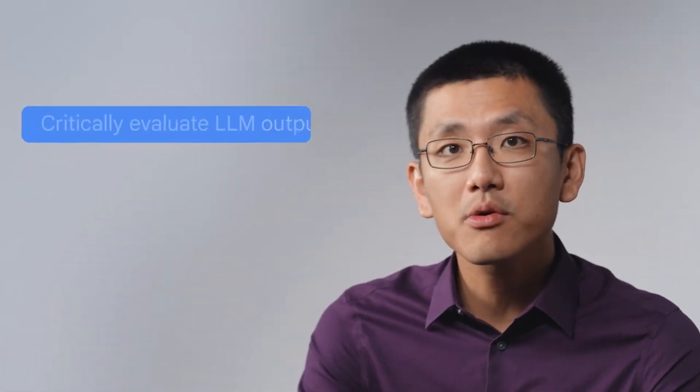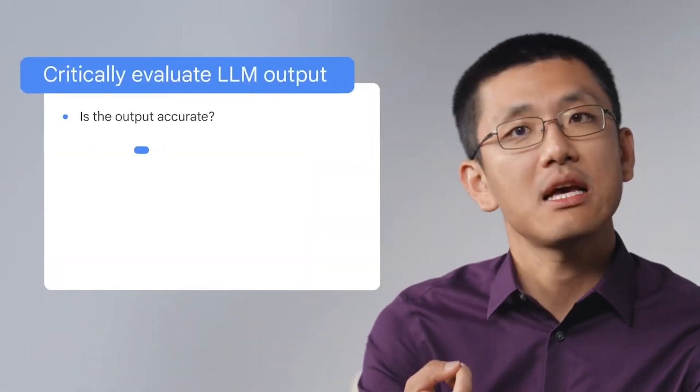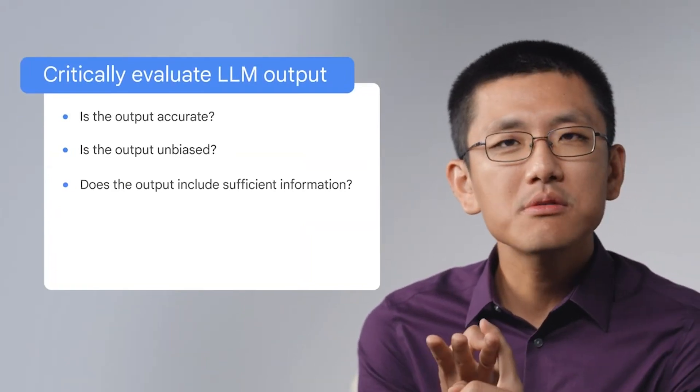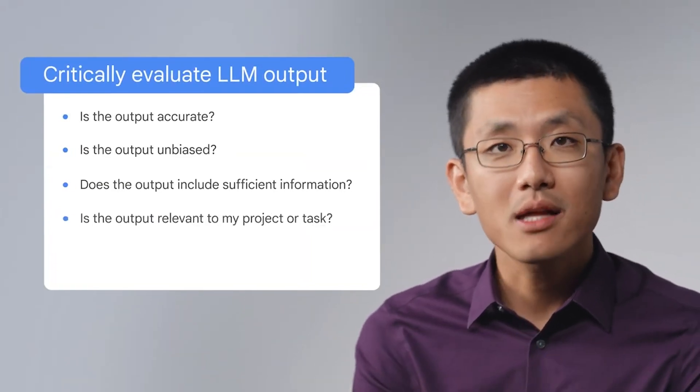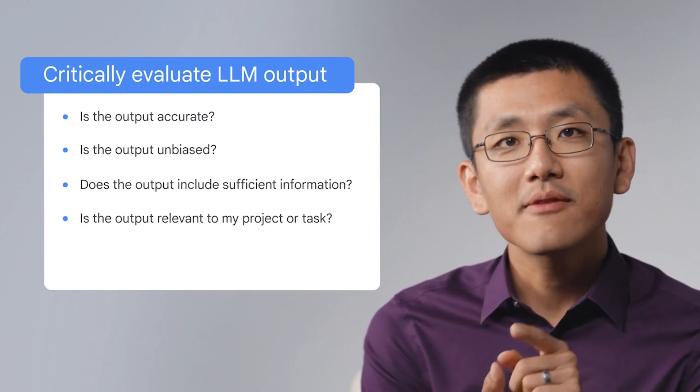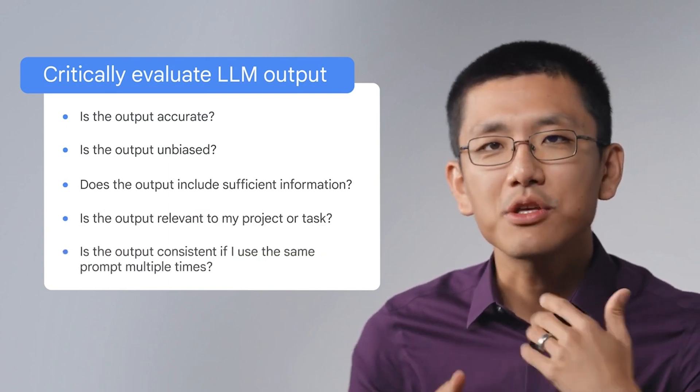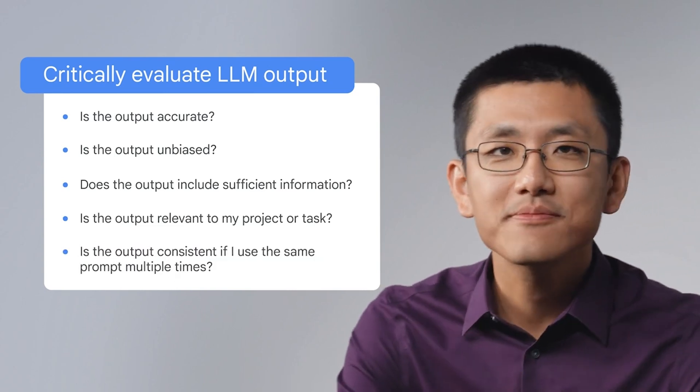Second, LLM limitations. LLM output may sometimes be inaccurate, biased, insufficient, irrelevant, or inconsistent. You should critically evaluate all LLM output by asking yourself the following questions: Is the output accurate? Is the output unbiased? Does the output include sufficient information? Is the output relevant to my project or task? And finally, is the output consistent if I use the same prompt multiple times? If you identify any issues when you evaluate output, iterating on your initial prompt can often help you resolve these issues and get better output.